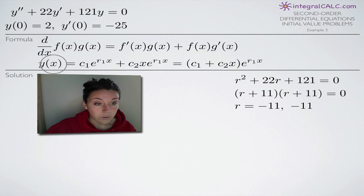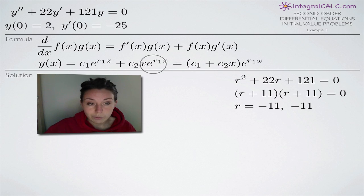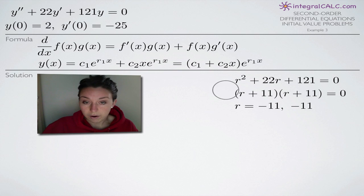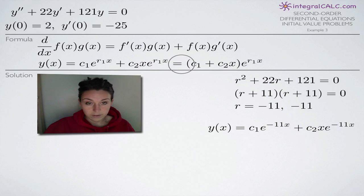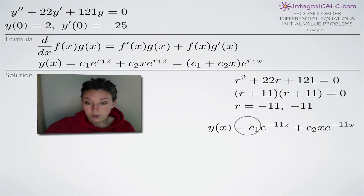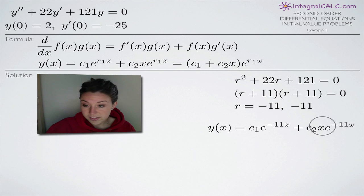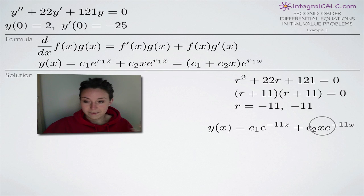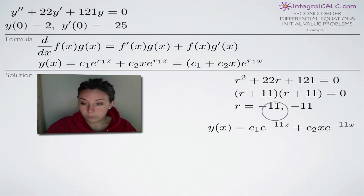In this case we're using this formula here for y of x when we have equal real roots. The right side is a simplified version where we factor out e to the r₁x. We plug our solution r = -11 in for r₁. We have r₁ and r₁ because our roots are equal to one another, so we're plugging in negative 11 to both terms. Notice these two terms are exactly the same except the second one is multiplied by x, which distinguishes c₁ from c₂ and reminds us we have two solutions.